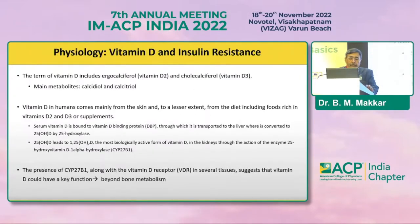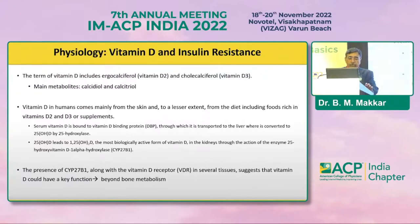The term vitamin D includes vitamin D2 (ergocalciferol) and vitamin D3 (cholecalciferol), and it has two main metabolites: calcidiol and calcitriol. Vitamin D in humans comes mainly from the skin, synthesized by the effect of sunlight on ergocalciferol, and also from dietary sources where it comes as vitamin D2 and D3.